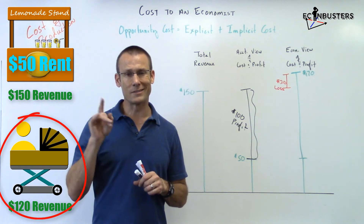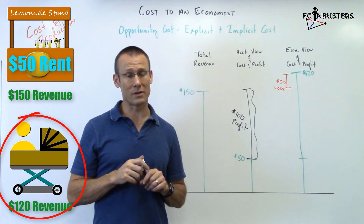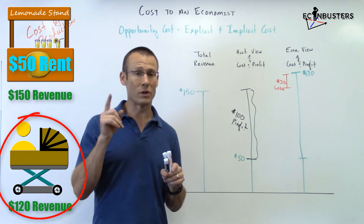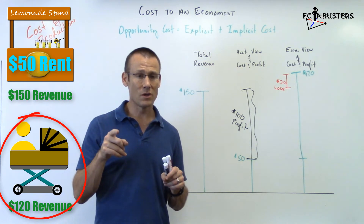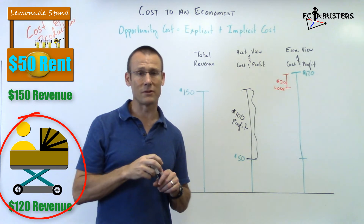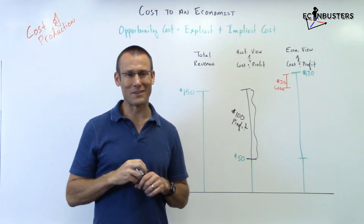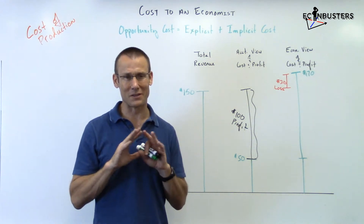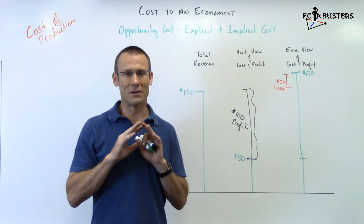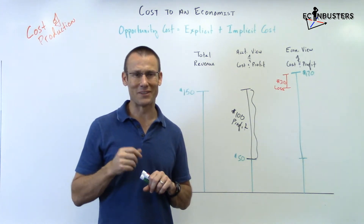If we'd evaluated from the babysitting standpoint, it would have shown to be profitable even from an economist's standpoint — by $20 — which makes sense, because $20 of loss on one side means the alternative earns $20 of profit. So what should she do? The answer is babysitting. They both give you an accounting profit, but what should she do? The one that gives her a positive economic profit — and that's babysitting. Hopefully that really helps you understand the concept. Thanks for tuning in, see you in the next video.